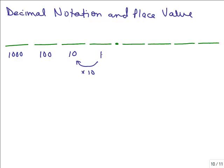So if you had 1, the next place value you multiply by 10 gives you 10. If you multiply 10 times 10, you get 100, and if you multiply that by 10, you get 1,000. So decimal notation is a base-10 system — you multiply by 10 to get the next place value to the left.